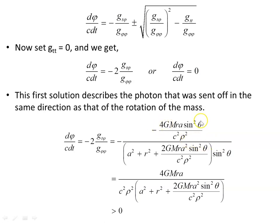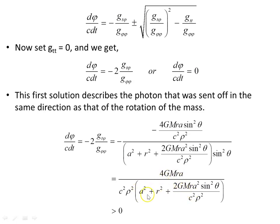Notice that the two minus signs cancel, so every part of this expression is positive. The whole object is greater than zero, meaning the photon sent off in the same direction as the rotation of the mass rotates in the positive direction — anti-clockwise when viewed from above the z-axis. You can see it entirely rotates in the same direction as the mass.